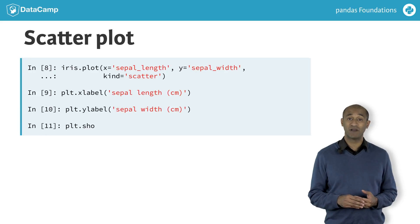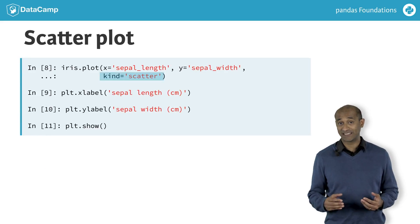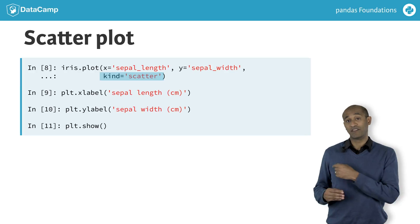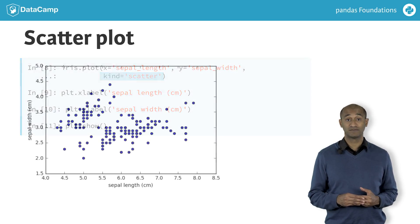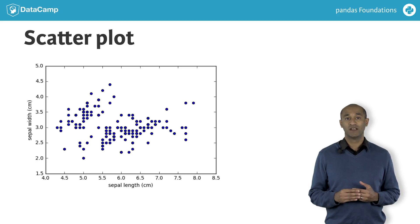We'll try again, this time specifying kind equals scatter. Let's also label the axes with units of measurement. The scatter plot is better. We'll see later how to distinguish the different species.